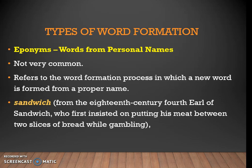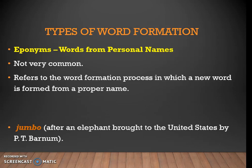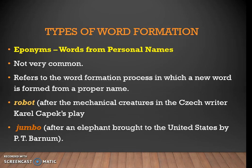Sandwich comes from the Earl of Sandwich, who first insisted on putting meat between two slices of bread while gambling. Jeans came from the Italian city of Genoa, where that type of cloth was first made. Jumbo is named after an elephant brought to the United States, and robot is named after mechanical creatures in a play by a Czech writer.